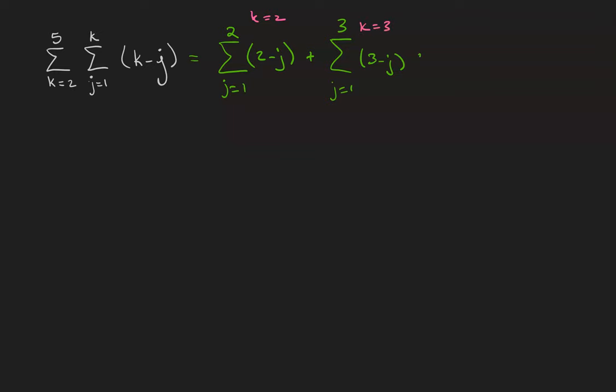Plus the sum from j equals 1 to 4 of 4 minus j, this is when k is 4. And then when k is 5 we get the sum from 1 to 5 of 5 minus j.